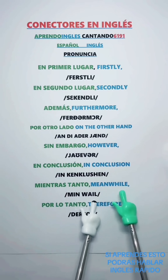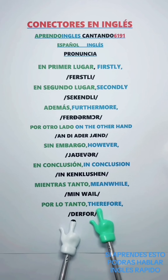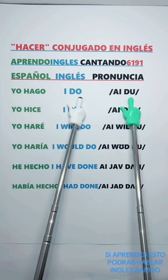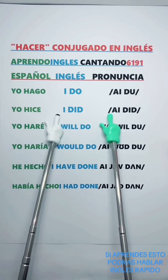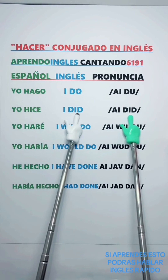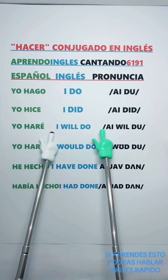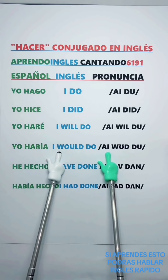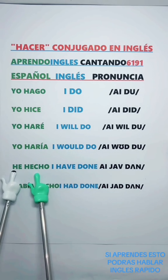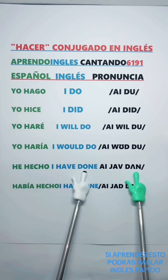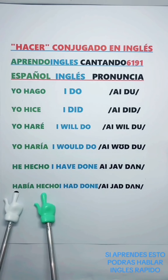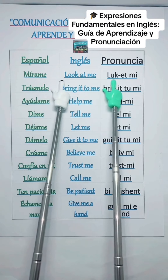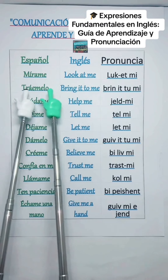Y por lo tanto — Therefore. Yo hago — I do. Yo hice — I did. Yo haré — I will do. Yo haría — I would do. He hecho — I have done. Había hecho — I had done.